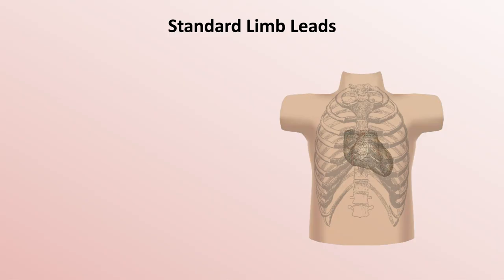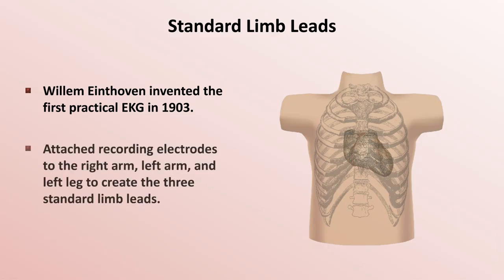The standard limb leads date all the way back to 1903, when Wilhelm Eindhoven invented the first practical EKG. He attached recording electrodes to the right arm, left arm, and left leg in order to create the three standard limb leads.